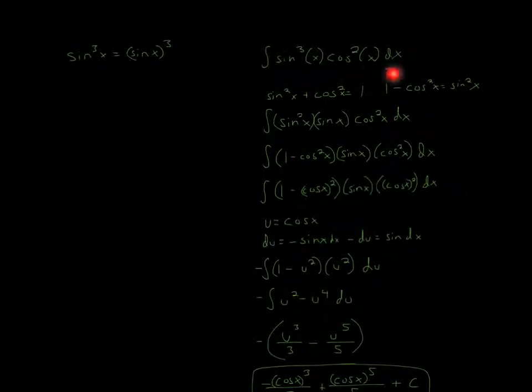So for this problem, we have sine cubed x times cosine squared x. One note I want to make is sine cubed x is the same thing as sine x cubed. Some people get tripped up by this, but I just want to clarify that.